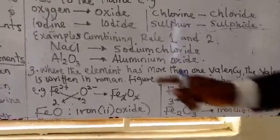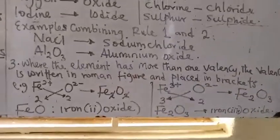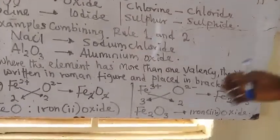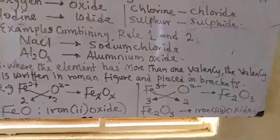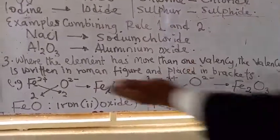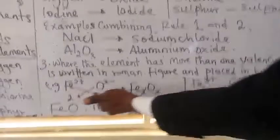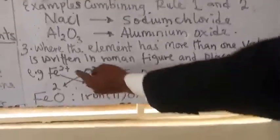Rule number 3, the third and the last rule. Where the element has more than one valency, the valency is written in Roman figure. For example, there are some metals that have more than one valency, like iron. If you look at iron here, you can see the formula. This is how it is formed. Iron here is 2.